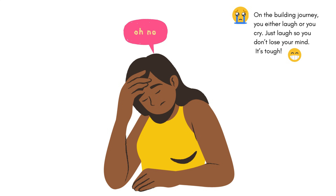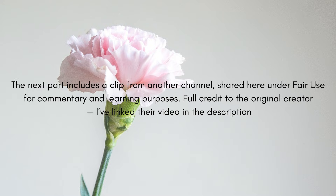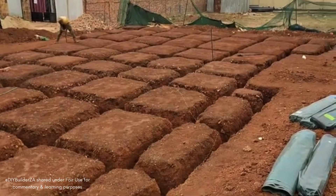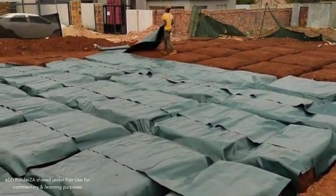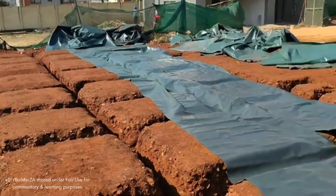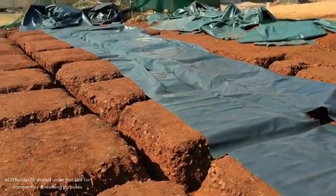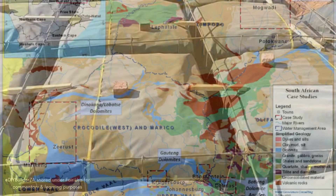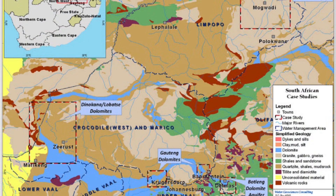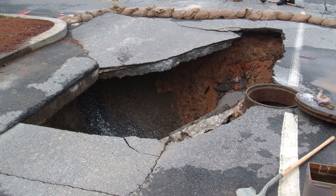The second foundation is the raft foundation. I watched a video recently where this type was used, and I thought it would be helpful to highlight why it cost over 100,000 rand. The owner mentioned that a geotechnical report found the area is on dolomite, meaning the soil is prone to sinkholes. Because of that, a strip foundation wouldn't have been safe or suitable, so a raft foundation was recommended instead.